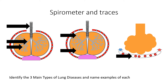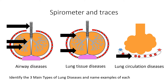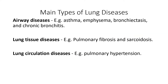The three types of diseases are airway diseases, lung tissue diseases, and lung circulation diseases. In terms of examples, you've got asthma and emphysema as the most common airway ones, pulmonary fibrosis or sarcoidosis for lung tissue ones, and for circulation ones we talk about pulmonary hypertension. It is worth taking time to learn a couple of examples of each of those different diseases.